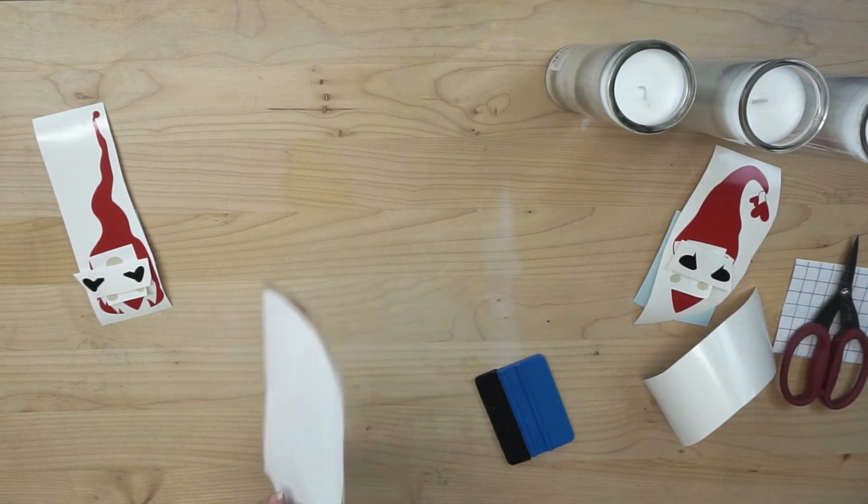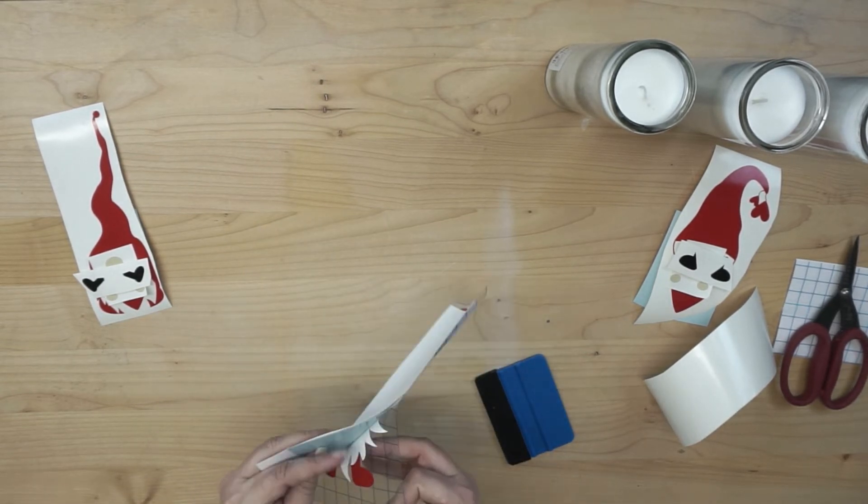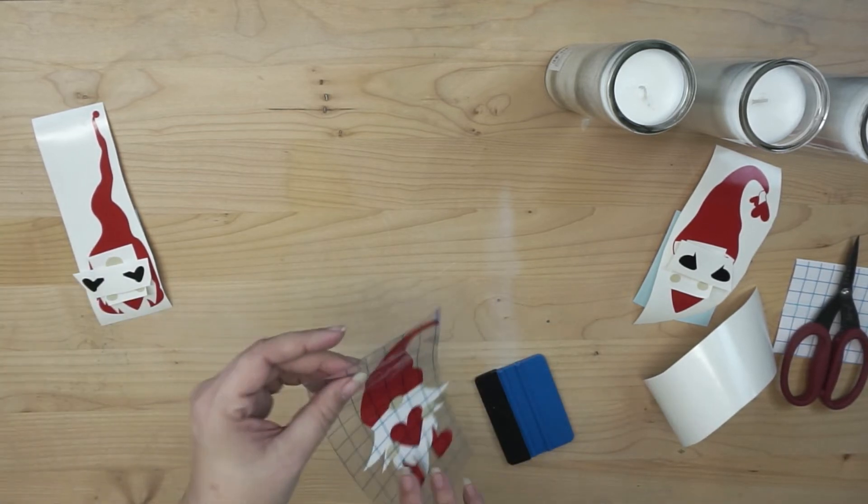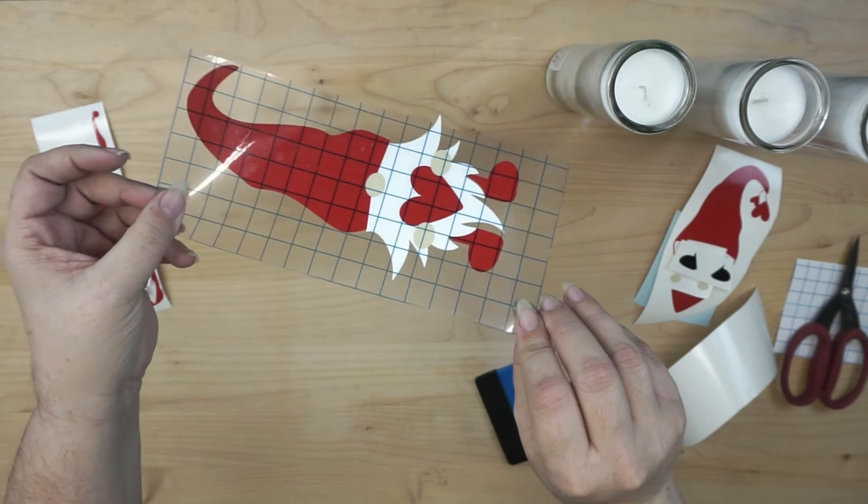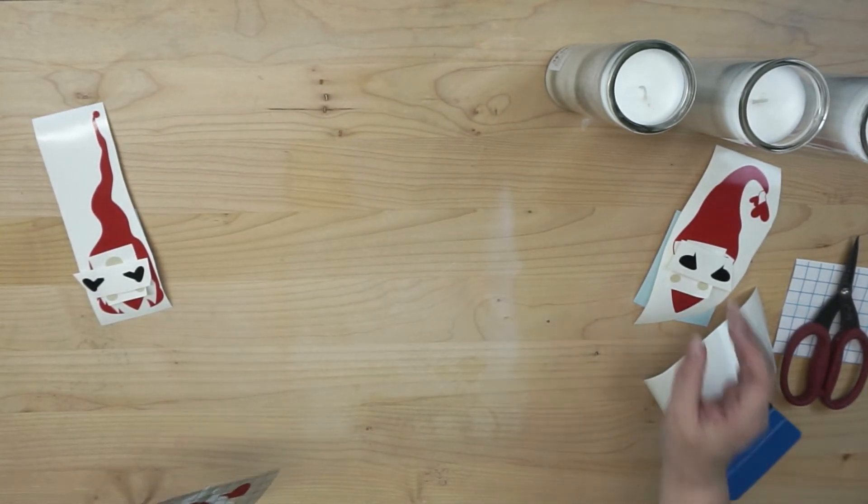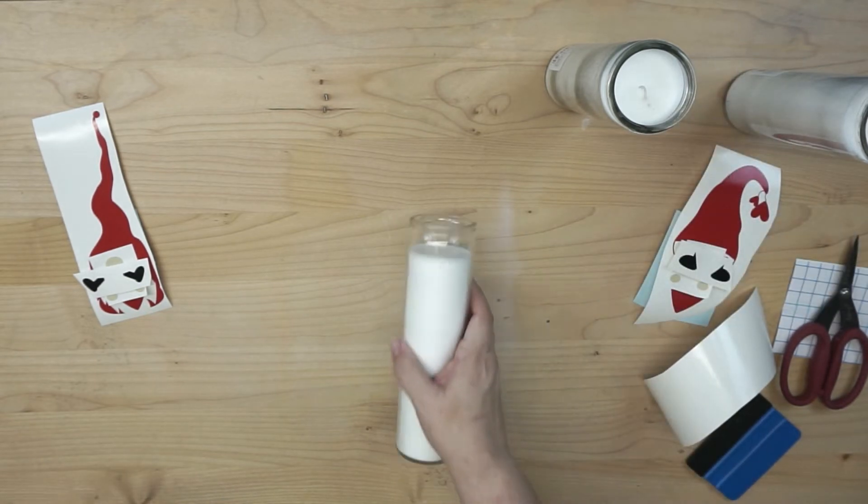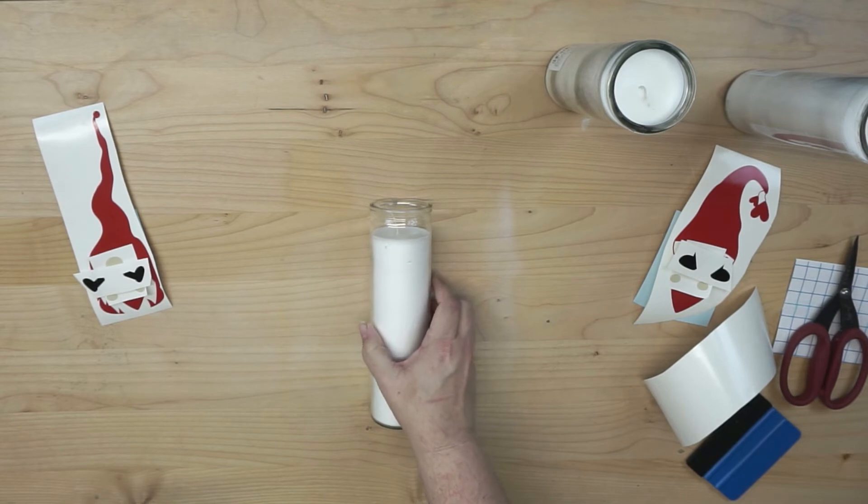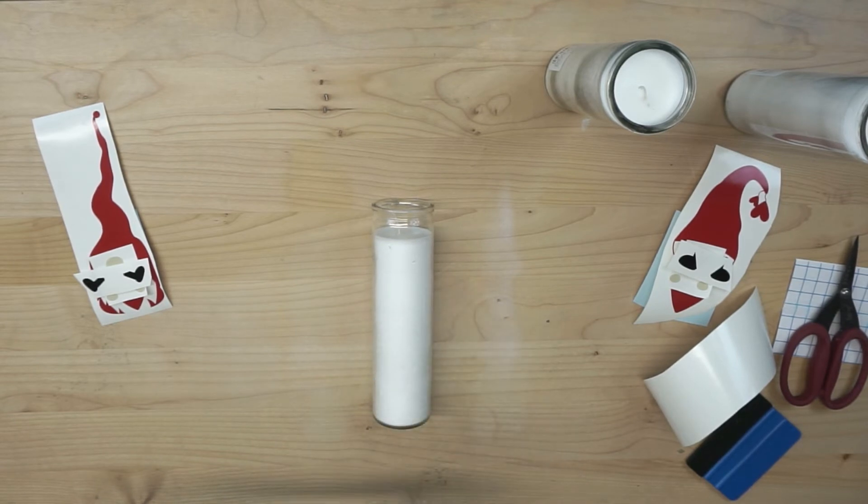Alright, so with that done, I should be able to peel the entire layered design up, and it's all layered here on my transfer tape. Okay, that's the benefit, especially when you're using a curved surface, then trying to layer individual layers on your candle. But it did promise you two ways, so we will also do a layering project on the candle itself.